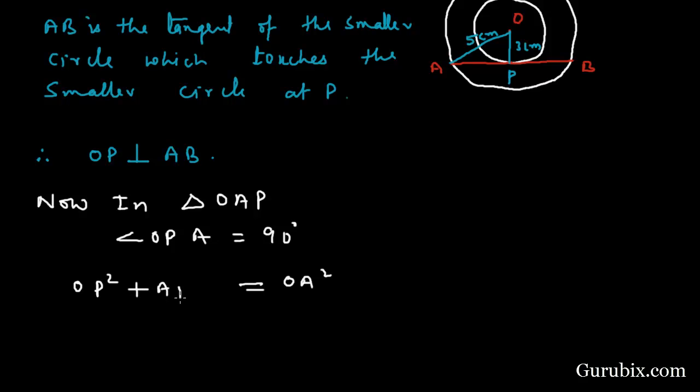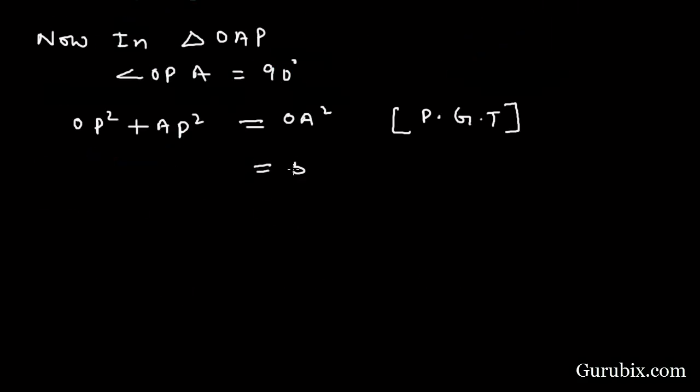This is because of Pythagorean theorem. OA is given as 5 centimeters, OP is given as 3 centimeters. We have to calculate AP. Therefore, AP² = 25 cm² - 9 cm² = 16 cm². This means AP equals 4 centimeters.